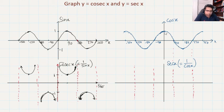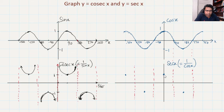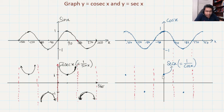Looking at the key points: when cos X equals 1, sec X equals 1 over 1 which is also 1. When cos X equals negative 1, sec X equals negative 1. As cos X decreases from its maximum of 1, the denominator decreases so sec X increases. So the graph increases from those points toward the asymptotes on both sides.